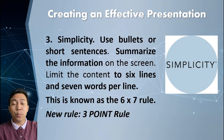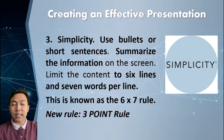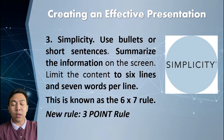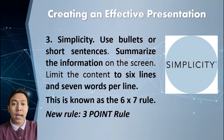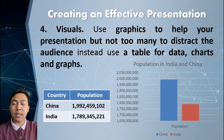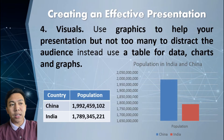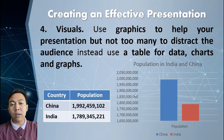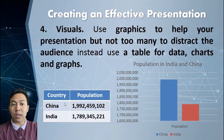Next is simplicity. Use bullets or short sentences. Summarize the information on the screen. Limit the content to six lines and seven words per line — this is also known as the six-by-seven rule. A newer rule sometimes used is the three-point rule, where you only have three bullets and the presentation goes using those particular points. We also have visuals — use graphics to help the presentation but not too many to distract the audience. Instead, use a table for data, charts, and graphs. Comparing between the two, you can see the difference between the population of China and India using a graph as compared to a particular table.